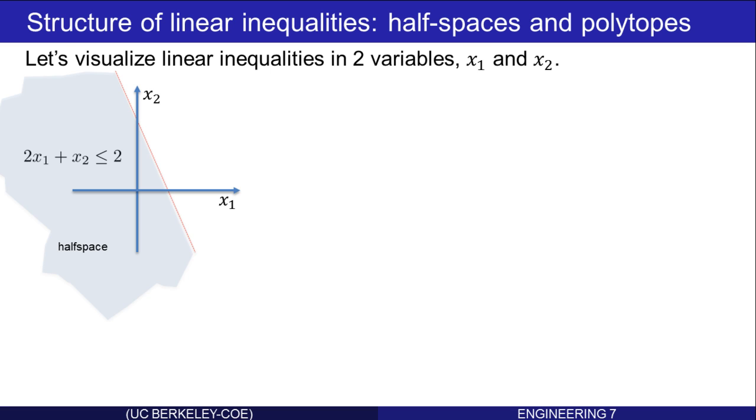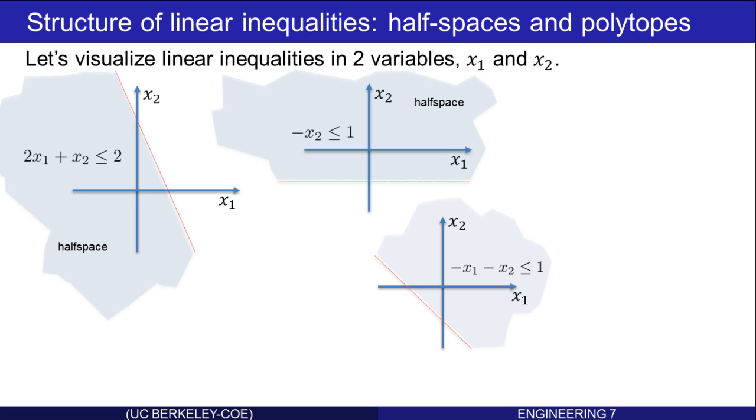Let's look at another, but different, inequality. Here's the inequality, negative x2 is less than or equal to 1. Of course, if I multiply by negative 1, that's x2 is greater than negative 1, and the set of points satisfying that are also half space. How about another inequality? Negative x1 minus x2 is less than or equal to 1. That's over here, again a half space. And finally, negative x1 plus x2 less than or equal to 1, and that's over in this region, another half space.